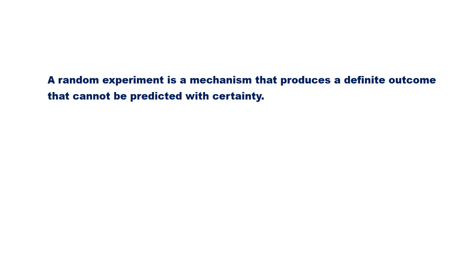A random experiment is a mechanism that produces a definite outcome that cannot be predicted with certainty. Before rolling a die, you do not know the result. This is an example of a random experiment. In particular, a random experiment is a process by which we observe something uncertain. After the experiment, the result of the random experiment is known.